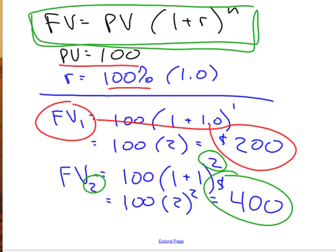What if you leave it in the bank for two years? FV2 in green is equal to 100 times 1 plus 1 squared. 100 times 2 squared, 100 times 4, $400. So, just note how the formula works, as it should.